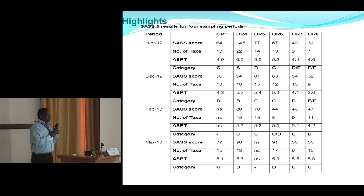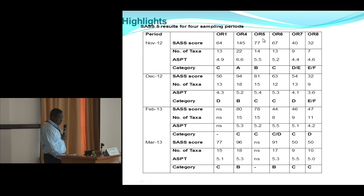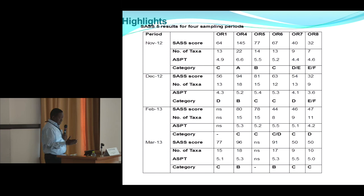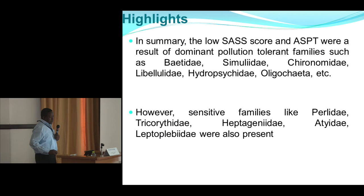In terms of results, to determine river health we had different sites and different sampling times. For example, at site OR1, OR4, or OR5, for the November period we had a SAS score of 64, 13 taxa, and an average score per taxa of 4.9. Using the bands, that would categorize the river at that site as C — fairly modified. We repeated this for all sites and time periods to describe river health.